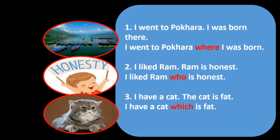What does Relative Clause basically do? Relative Clause basically joins two sentences. And one more important thing about Relative Clause is it gives extra or additional information. For example, when we say 'I went to Pokhara where I was born,' the given information is 'I went to Pokhara,' but the Relative Clause gives one more information that Pokhara is also my birthplace. So to talk about place we use 'where,' for person 'who,' and for animal 'which.'